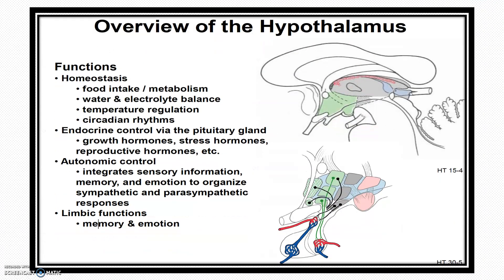Overview of the hypothalamus. Always for the exams, we need to write a short essay or long essay like the functions of hypothalamus or the vegetative functions of hypothalamus. There are many functions like homeostasis, endocrine control, autonomic control, limbic functions, etc. Whenever we are going for an examination, we have to write the essay, so we need to actually write up and fill the page. We need to know more details.